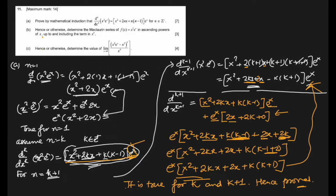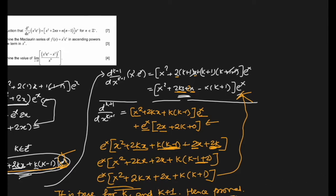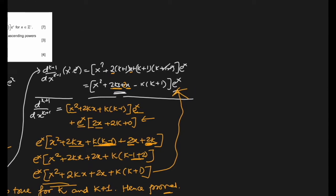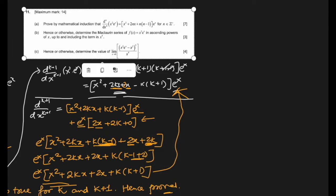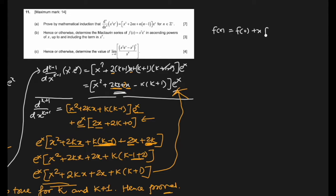Part b: determine the Maclaurin series for f(x) = x²eˣ in ascending powers of x up to and including x⁴. The Maclaurin series is f(x) = f(0) + x·f'(0) + (x²/2!)·f''(0) + (x³/3!)·f'''(0) + (x⁴/4!)·f''''(0) + ...